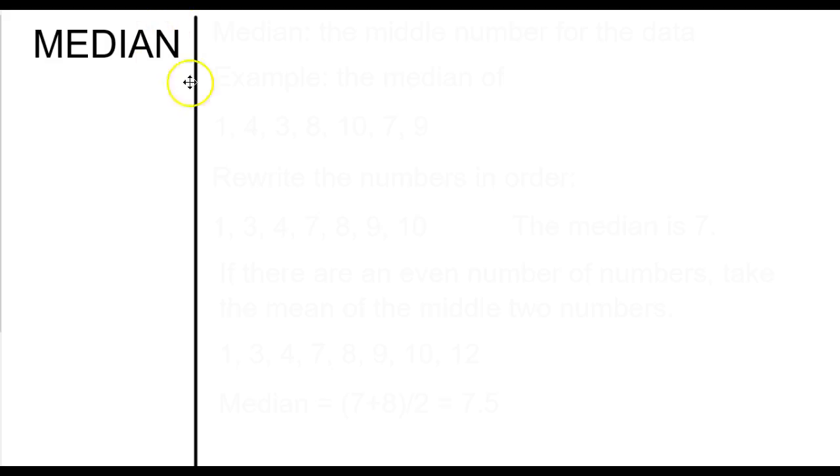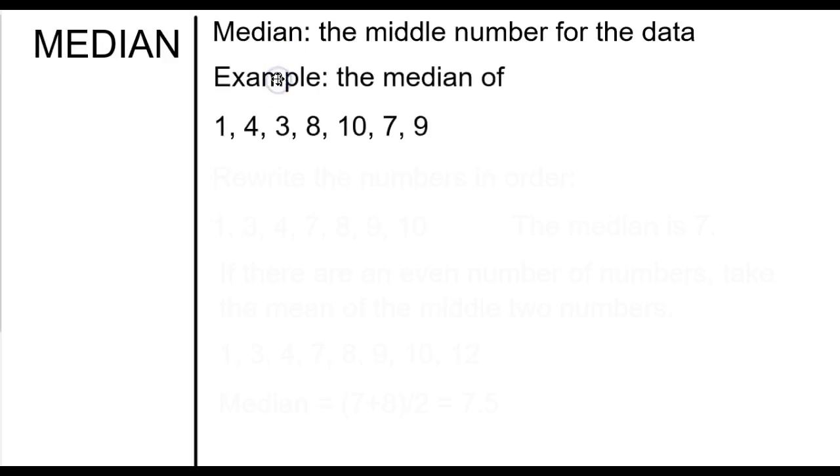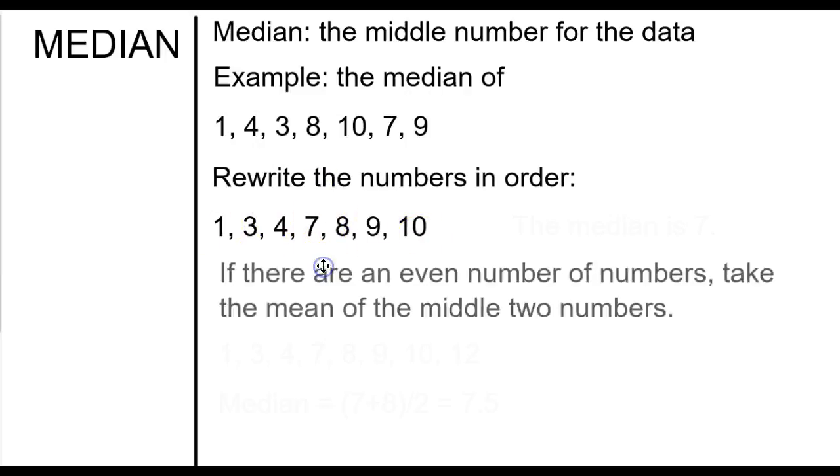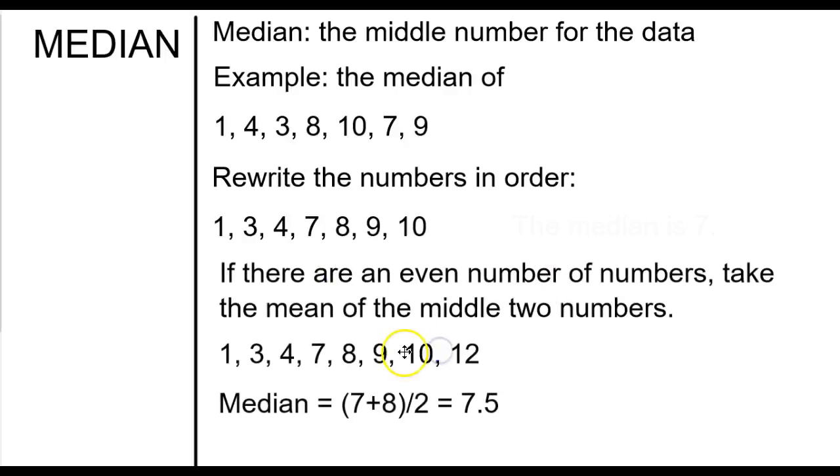Two other potential options for statistical analysis that may be used in class include the median, which means finding the middle number of the data set. If you had this data set here, the first thing you need to do is put those numbers in order. And then if you have two numbers in the middle, you would need to take the mean of your middle two numbers.